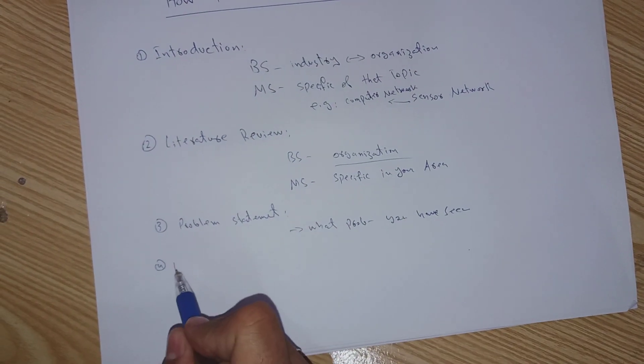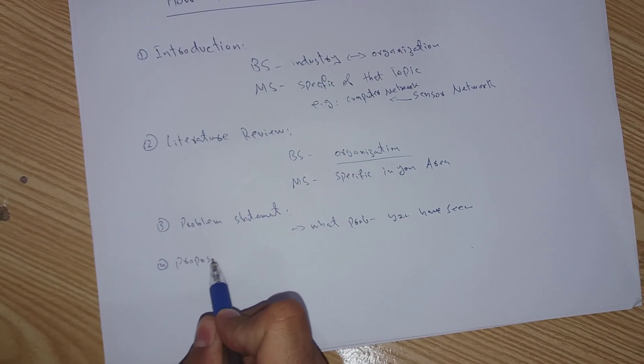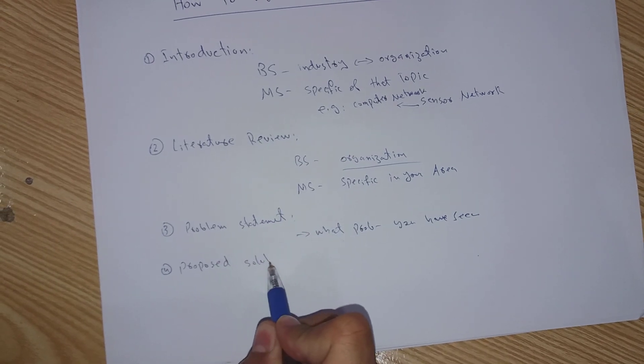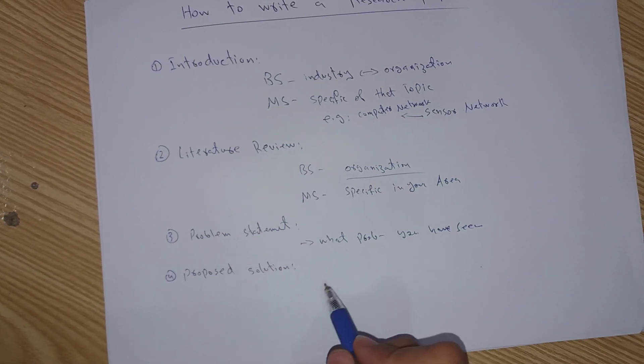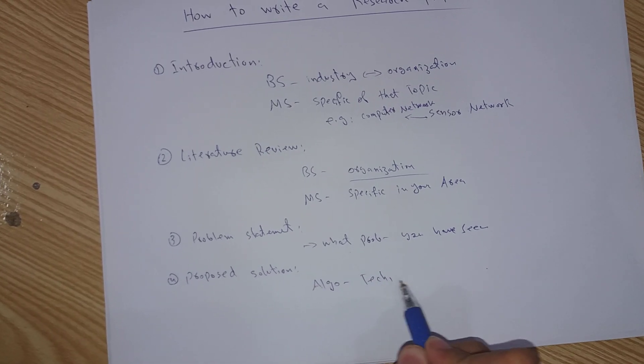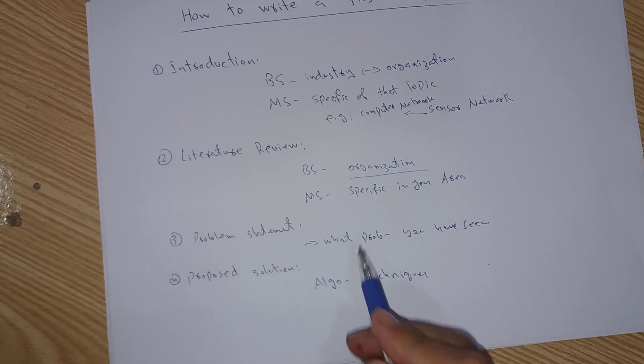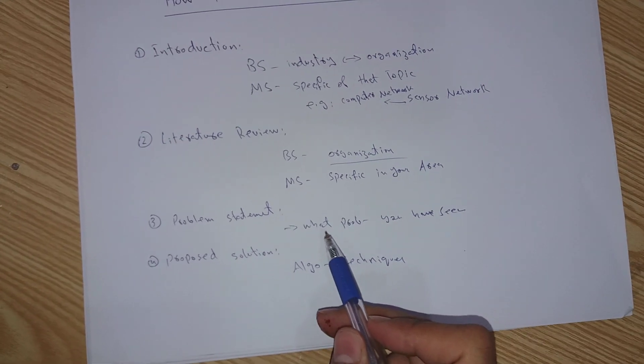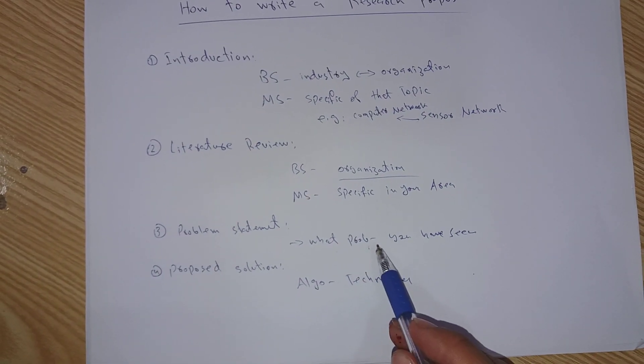Number four heading is proposed solution. Proposed solution means you have to write here algorithm or techniques. The problem which you have identified here in the third heading, you have to define here how you will solve that problem.